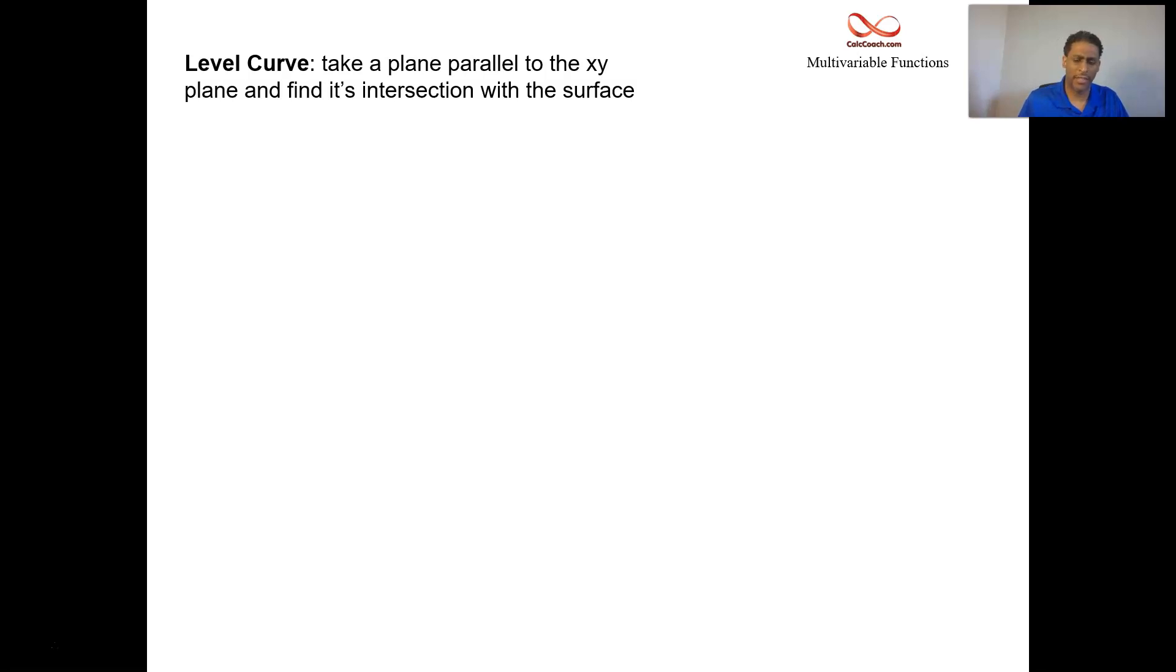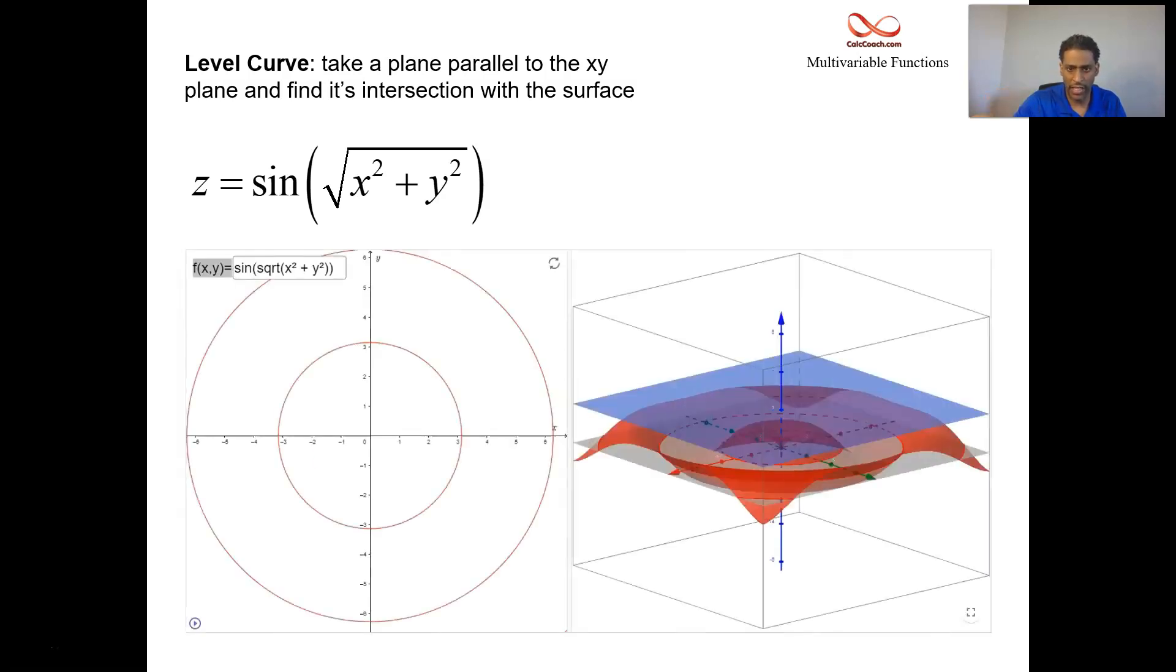With multivariable, something that's very important to you will be a level curve. You have a plane parallel to the xy plane, and you want to find out where it intersects your surface at. Here's a nice animation for this particular function. It's the sine of x squared plus y squared, but that's underneath a radical. Here's the multivariable 3D surface there. It has this periodicity, but it happens along circles.